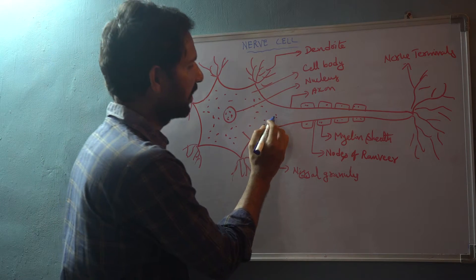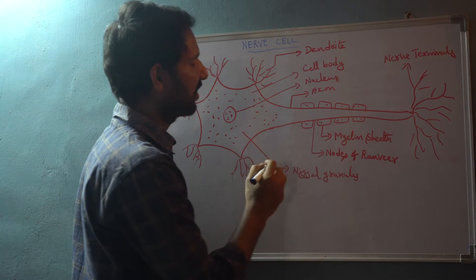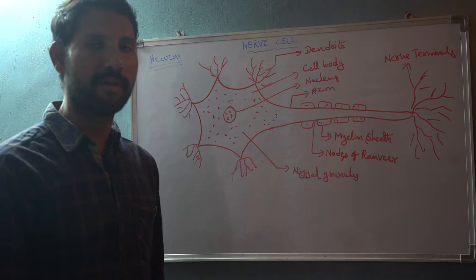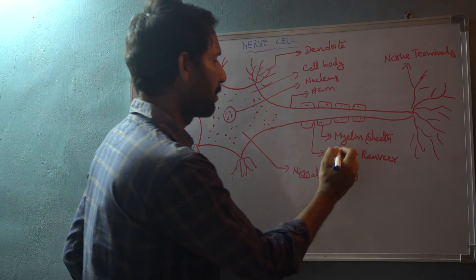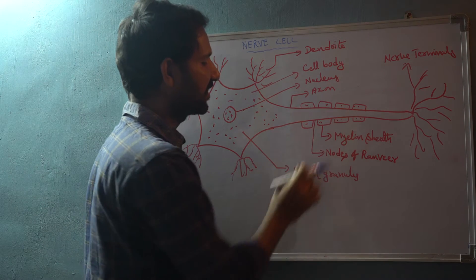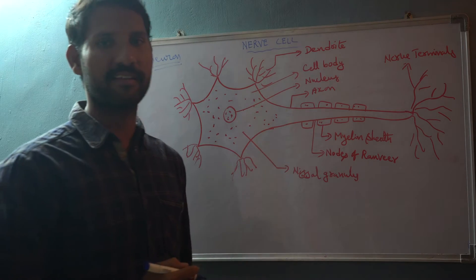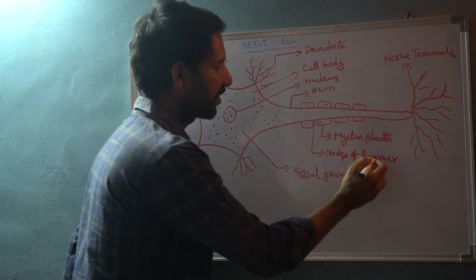The long cylindrical structure present here is the axon. Around the axon, it is covered by a sheath known as the myelin sheath. Along the myelin sheath, some nodes are present, which are also known as nodes of ranvier.